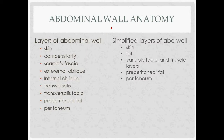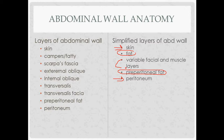Abdominal wall anatomy. There's a simplified way to look at it that works regardless of where on the wall you are. You have skin and peritoneum on the outermost layers, then fat sandwiched with variable layers of fascia and muscle in between — subcutaneous fat, preperitoneal fat, and different fascia and muscles depending on location. On the lateral wall for example: skin, then Camper's fascia, then Scarpa's fascia, then the external, internal, and transversalis muscle layers, transversalis fascia, preperitoneal fat, and then peritoneum.